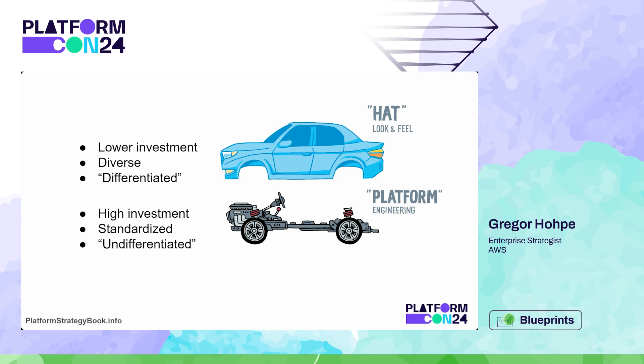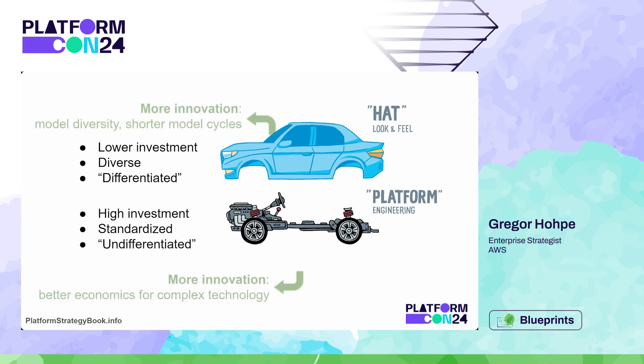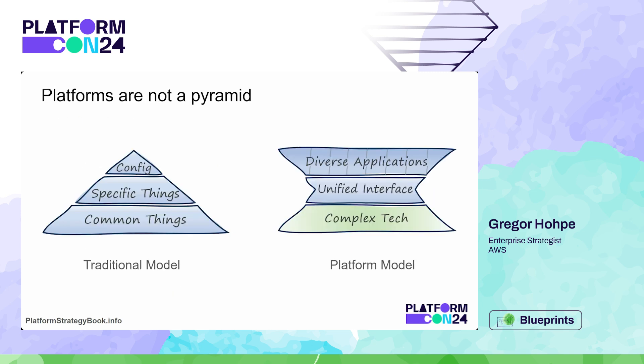So what they started to do is use a platform model — a base platform on top of which they could produce many different models. For example, Volkswagen did this: on the same chassis they started with a Golf, a Passat, later an A4, a hatchback, a sedan, a wagon, and all these varieties. The goal wasn't to make more uniform cars; the goal was better economies of scale at the bottom but more model diversity to address more customer groups at the top. That's an important lesson for us in IT when we build platforms.